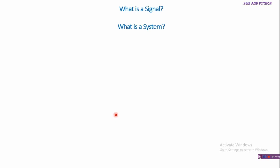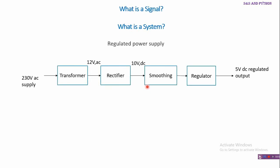To explain what is a signal and what is a system, I have chosen an example of a regulated power supply. This is the block diagram of a regulated power supply. It consists of a transformer which steps down the voltage, then a rectifier which rectifies the input AC, then a smoothing circuit which removes ripples in the DC, and then a regulator circuit which gives a constant voltage at its output. The transformer takes 230 volts RMS AC at 50 Hz and steps it down to 12 volts at 50 Hz.